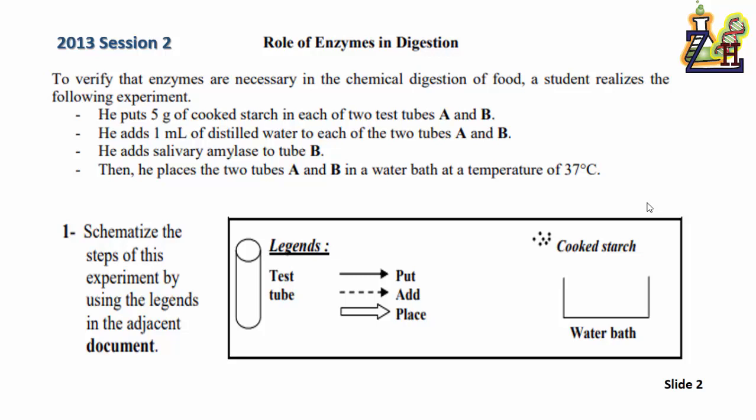These are the steps we see how to do it. He puts 5 grams of cooked starch into two tubes A and B. He adds 1 milliliter of distilled water to the two tubes A and B. He adds salivary amylase to tube B. Then he places the two tubes A and B in a water bath at a temperature of 37 degrees Celsius.